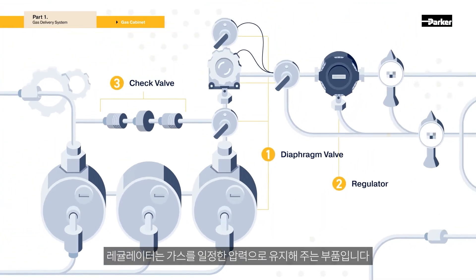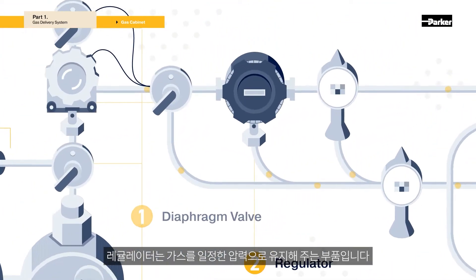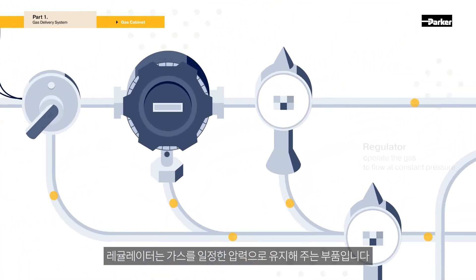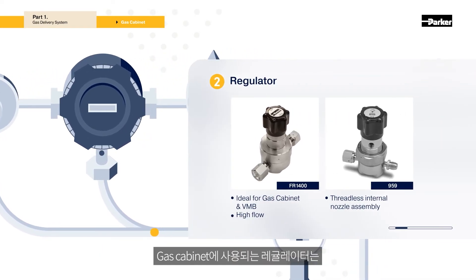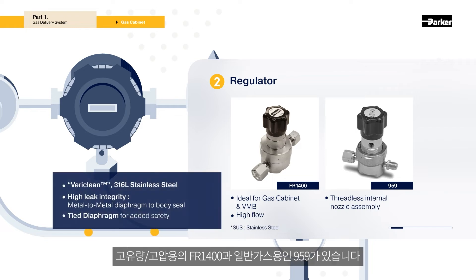The regulator is a component that operates to ensure the gas flows at a constant pressure. It is classified by the pressure range and flow rate of the gas being drawn in. The regulators used in the gas cabinet are the FR1400 for high flow and pressure, and the 959 for standard flow.